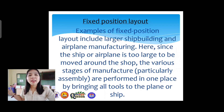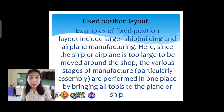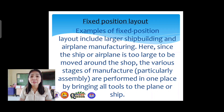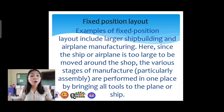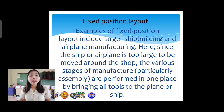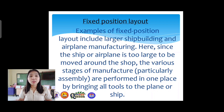Next is the fixed position layout. Examples include larger ship building and airplane manufacturing. Since the ship or airplane is too large to be moved around, the various stages of manufacture — particularly assembly — are performed in one place by bringing all tools to the plane or ship. The workers adjust themselves; that's fixed position layout.